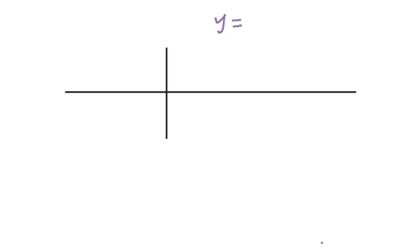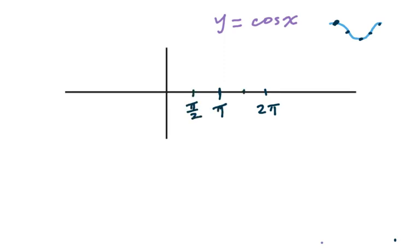For y equals cosine x, the graph will be like this. We need five points. We do the two pi, half will be pi, half gives pi over two, then this part three pi over two. We got one and negative one. Remember for cosine x we get started from maximum, then going down, go to minimum, going up, go to maximum. We can sketch the graph like this curve.